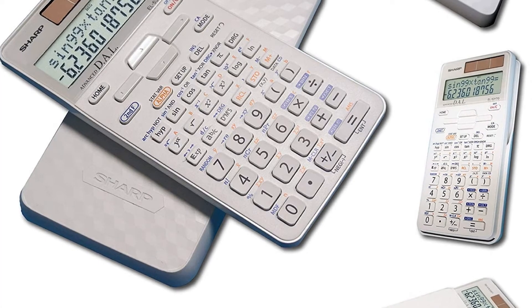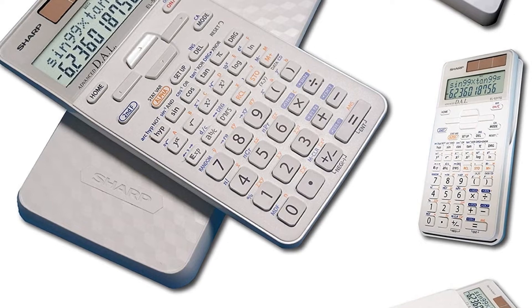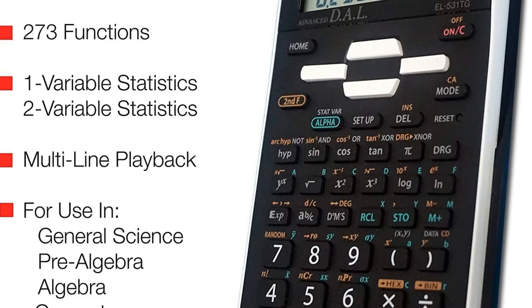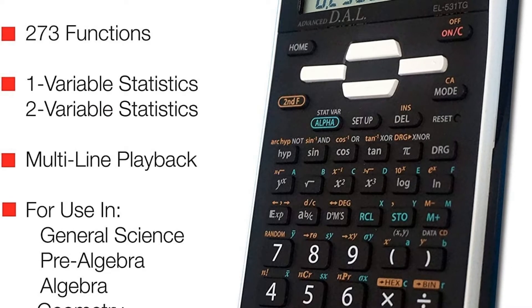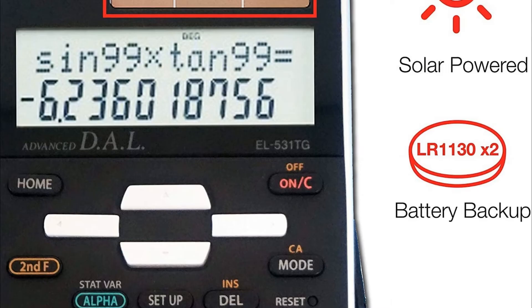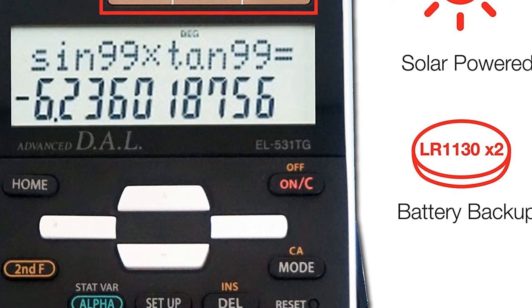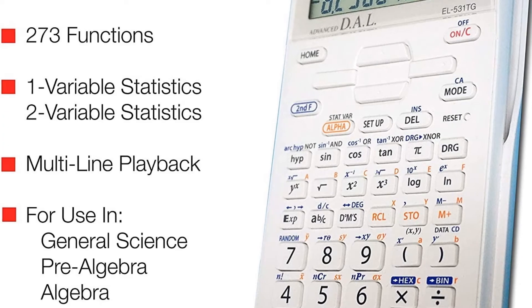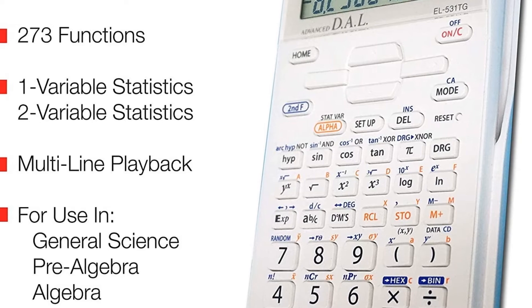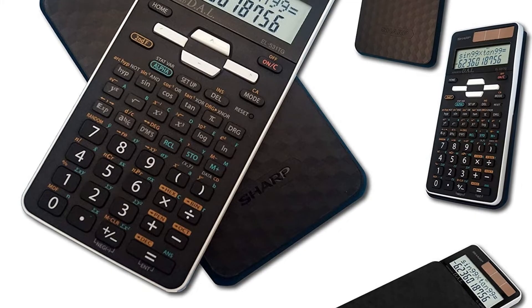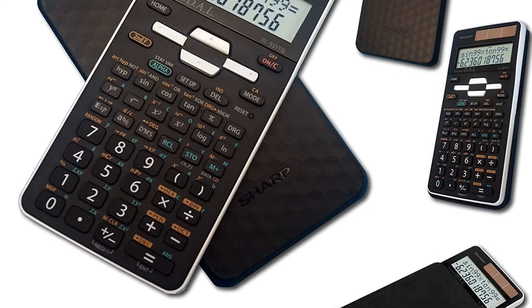This calculator performs 273 scientific, math, and statistic functions. It utilizes a two-line display featuring an exponent symbol and direct algebraic logic (DAL), which allows users to enter the elements of an expression in the exact order that they appear when written. The EL531TGBBW features a glossy black finish with white accents.